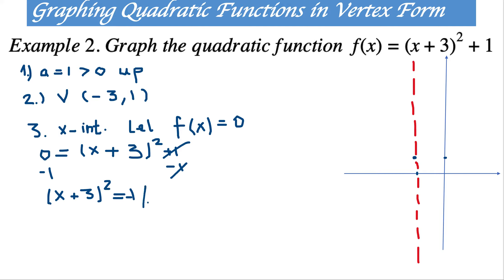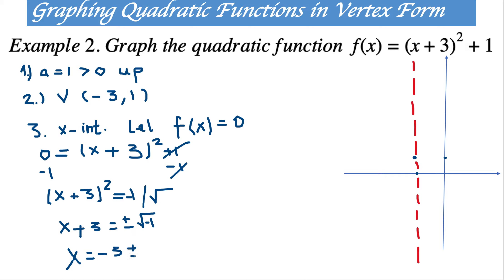Taking the square root of both sides, we get x plus 3 is equal to plus or minus the square root of negative 1. The square root of negative 1 means we have imaginary roots. So x equals negative 3 plus or minus i. As we can see, there is no real solution, so we don't have x-intercepts.